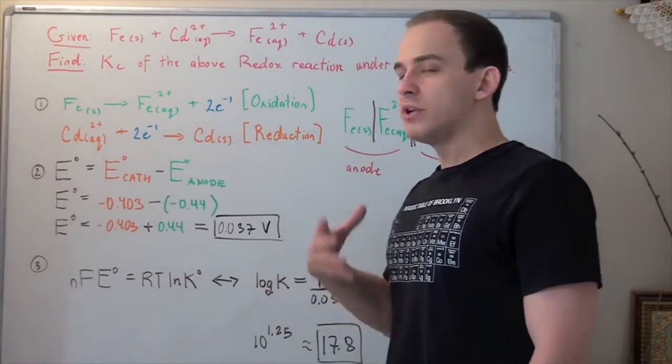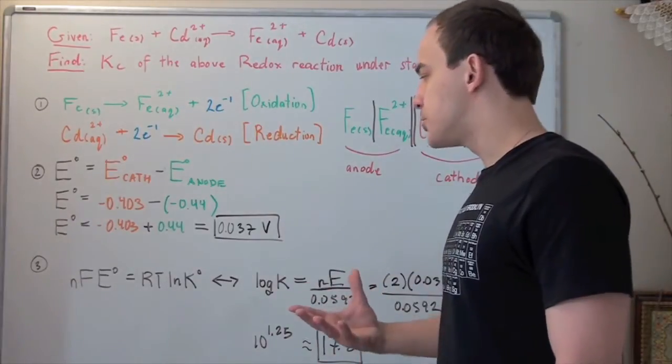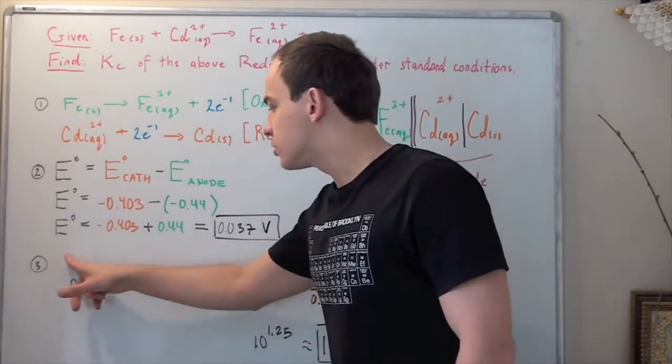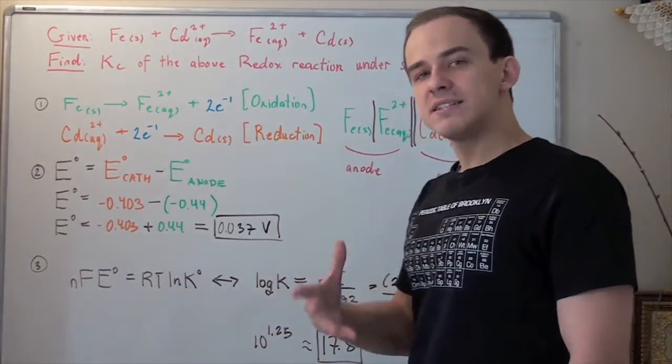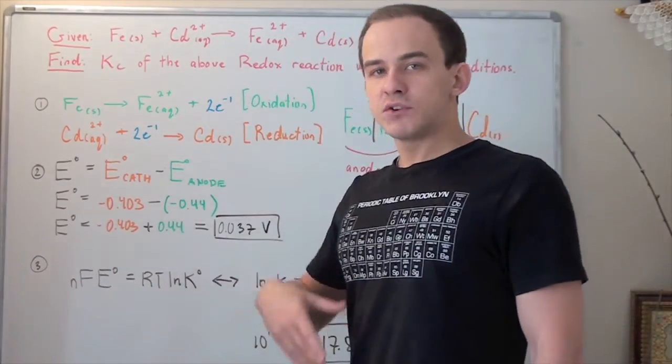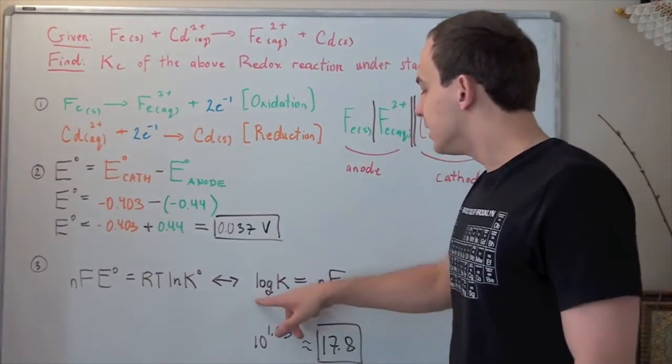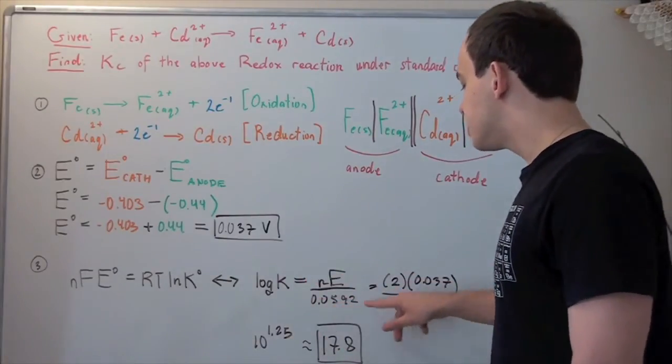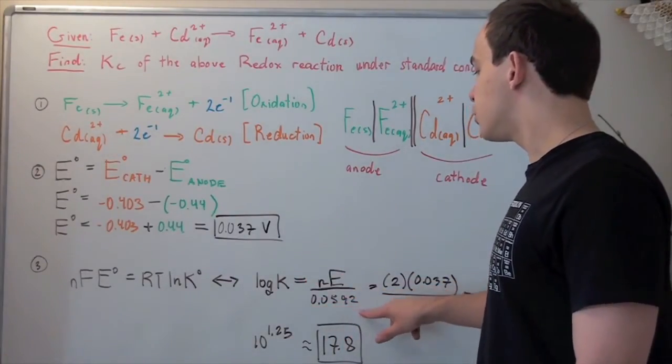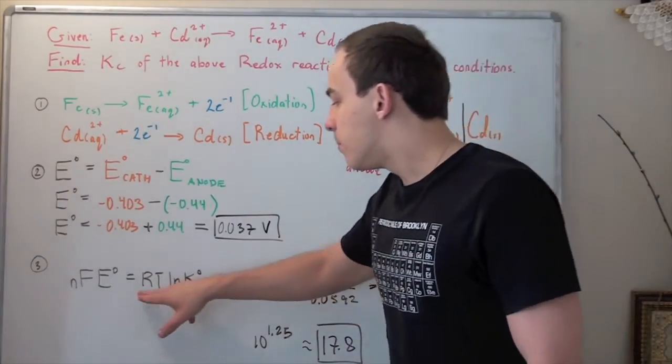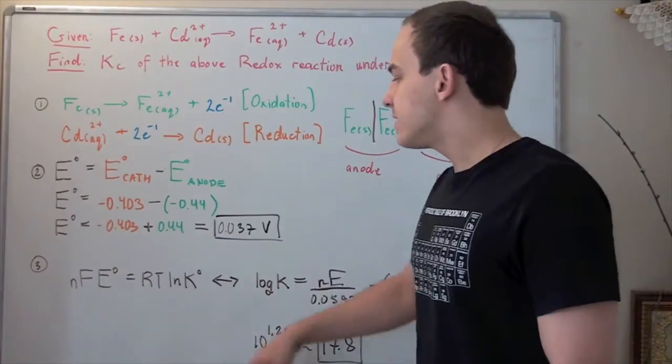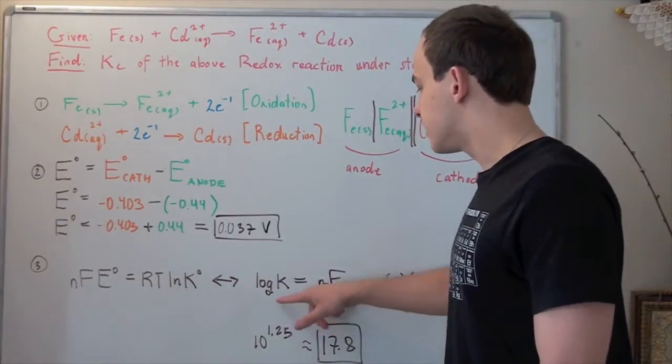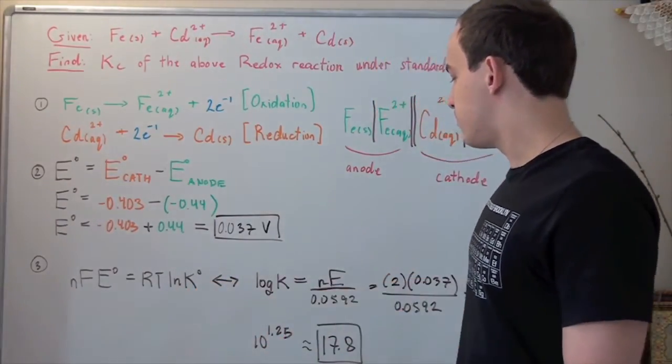In the previous lecture, we learned there is a relationship between cell voltage and equilibrium constant. We can convert this formula at 25 degrees Celsius to: log K equals n times E cell divided by 0.0592. This number comes from the fact that R and F are constants, and at 25 degrees Celsius, T is also constant. We also converted natural log to log base 10.